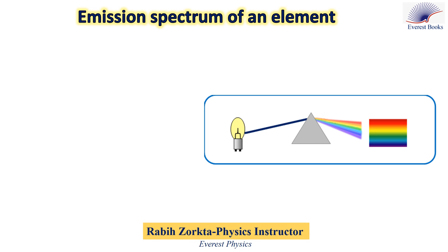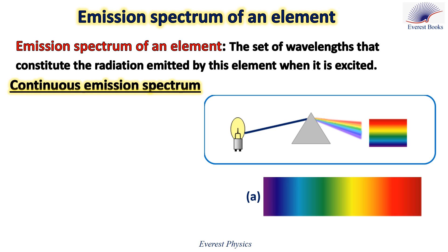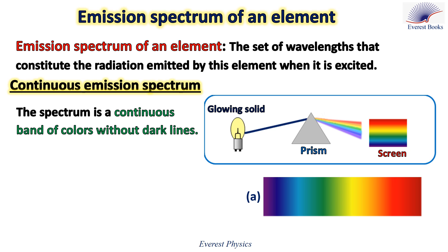Let's summarize what we have seen in the previous experiment. The emission spectrum of an element is the set of wavelengths that constitute the radiation emitted by this element when it is excited. Depending on the source, we define two kinds of emission spectrum. Starting with the continuous emission spectrum: the light emitted from a glowing solid, such as a tungsten filament in a dark room, falls on a prism, emerges dispersed, and falls on a screen as a continuous band of colors without dark lines. This is called the continuous emission spectrum.